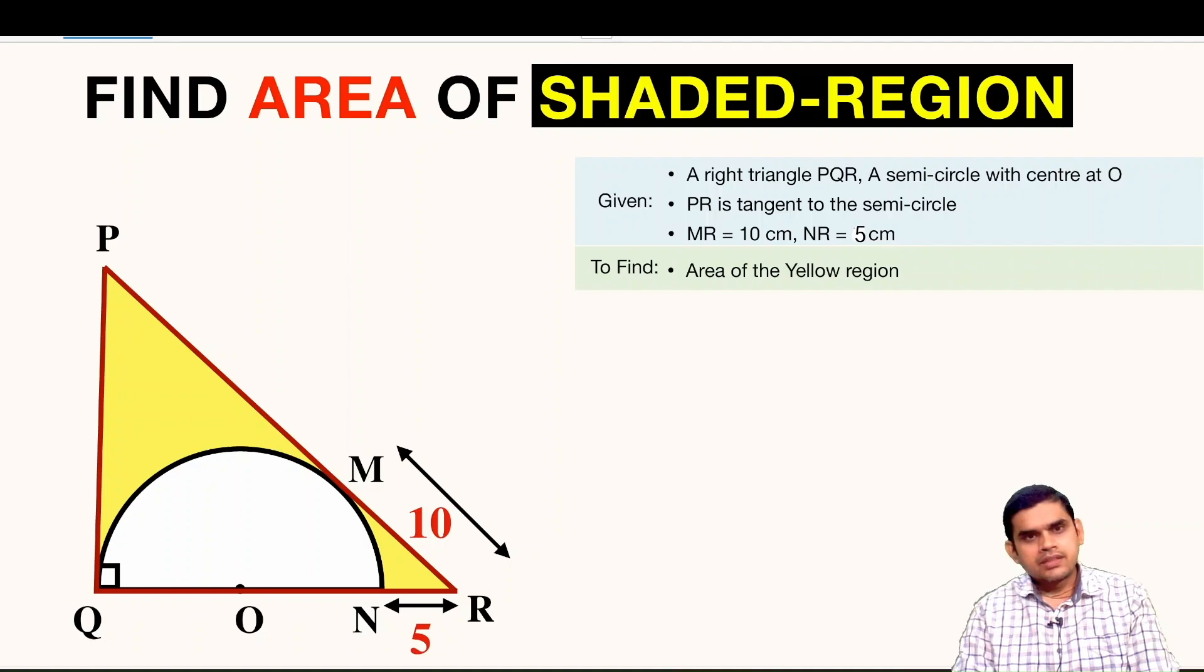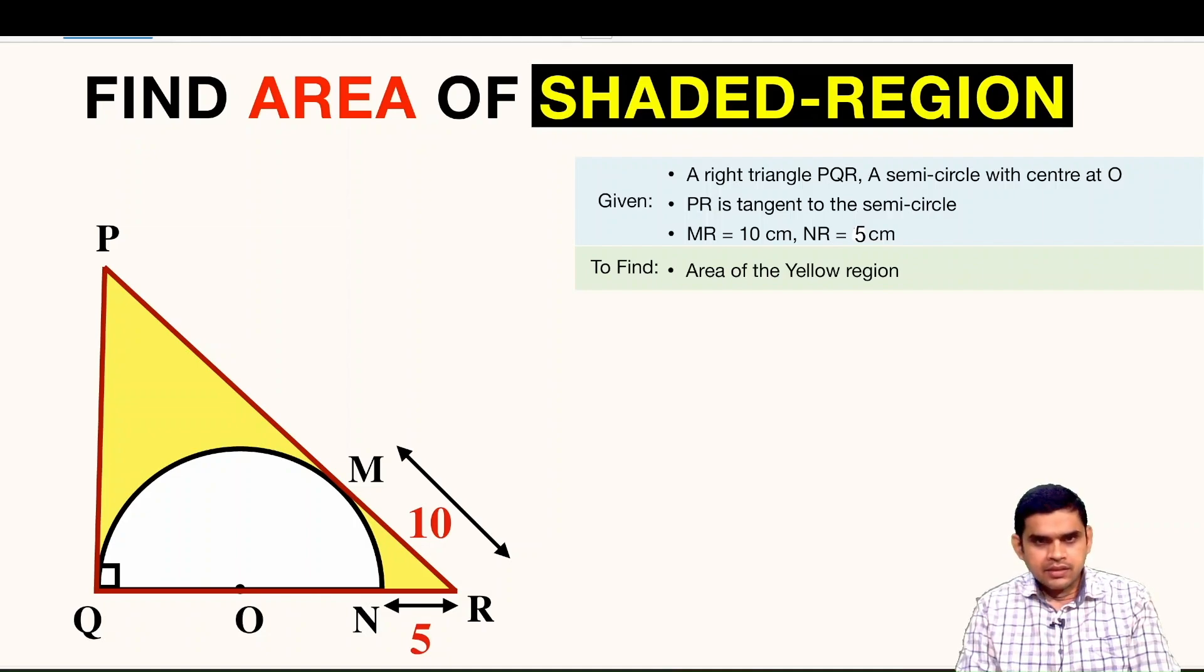In order to find the area of the triangle we need to compute the length of PQ and QR. And in order to find the area of the semicircle we need to find the radius R. Let us assume the radius to be R, here is R and this is also R.